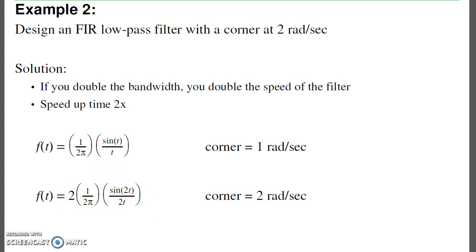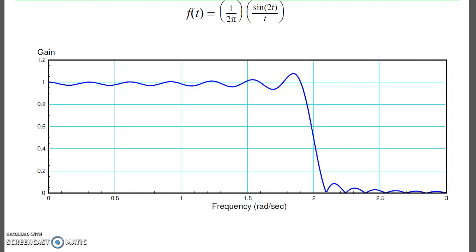I now have a corner at two radians per second. And if you do the same computations we did before to find the frequency response, this is what you get. And not too surprisingly, the gain is roughly one up to two radians per second, then drops off.